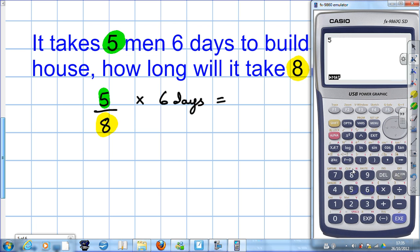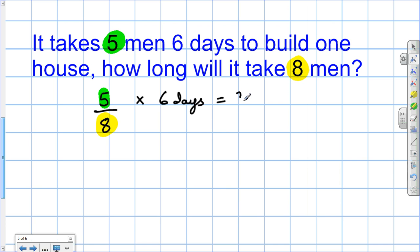So, five over eight times six. There's the answer. And as a decimal, it's 3.75 days.